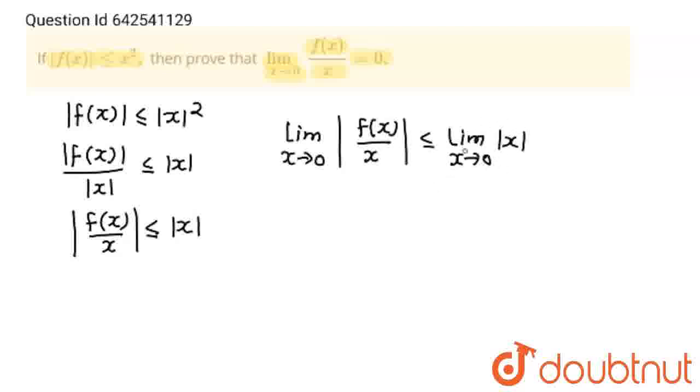And this value is 0, which means that lim x→0 |f(x)/x| ≤ 0.